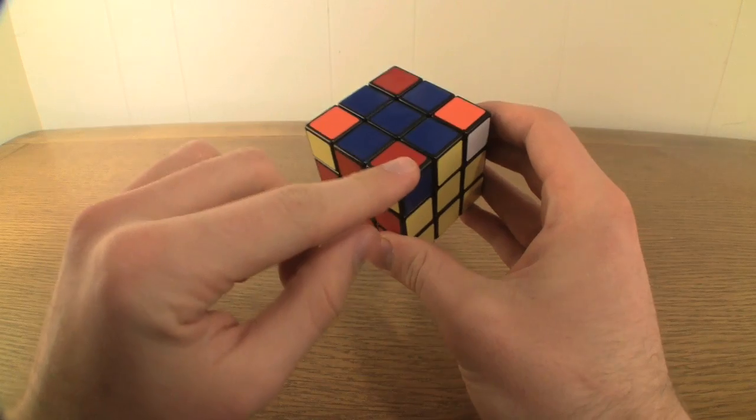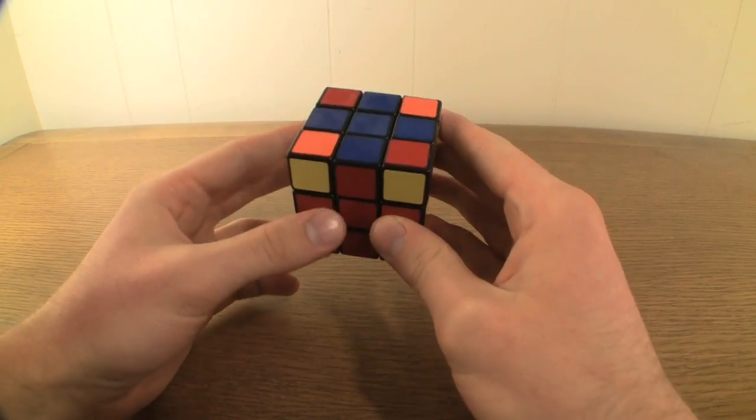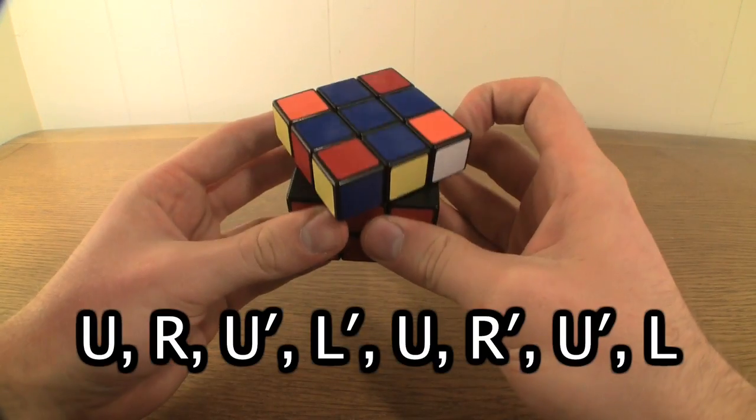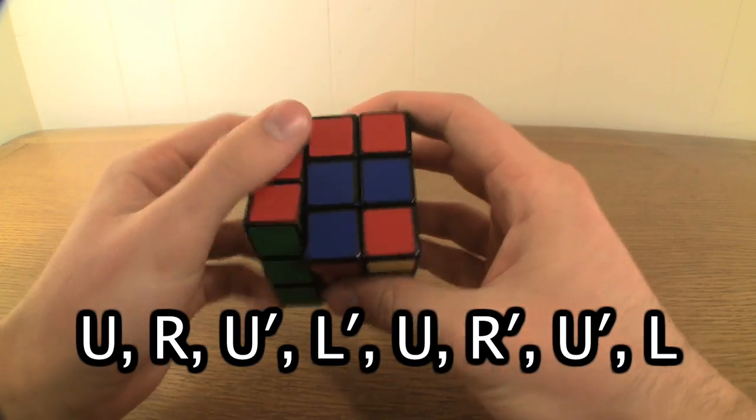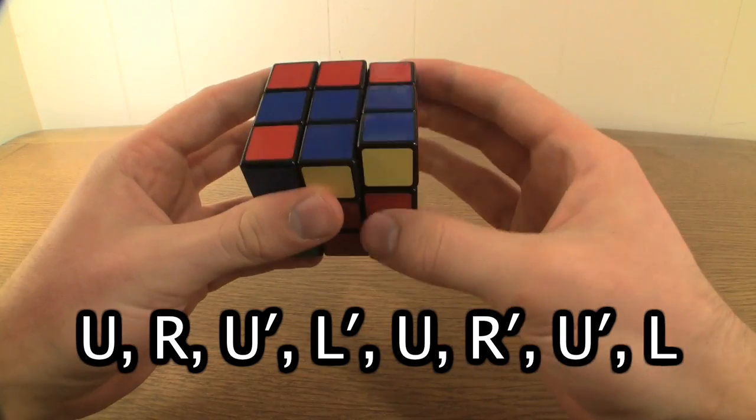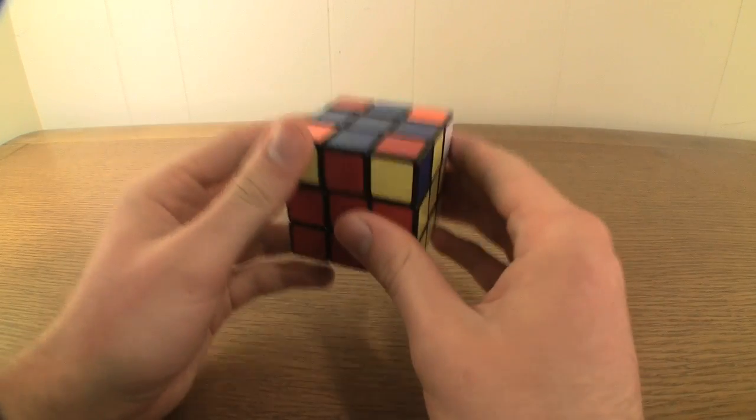Once one of your top corner pieces is in the correct place, hold the cube so that that piece is in the upper right of your front face and perform the algorithm U, R, U', L', U, R', U', L'. Check your top layer corner pieces again.